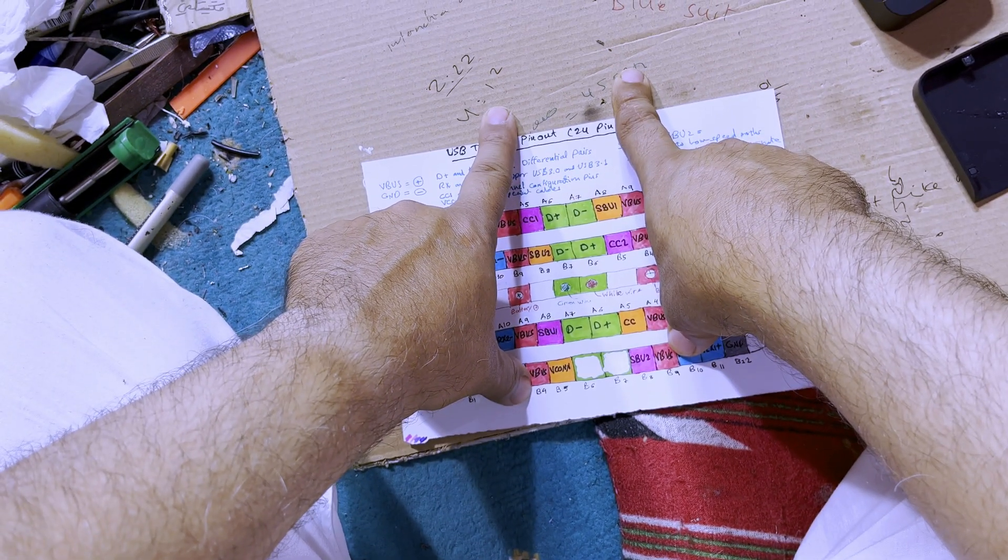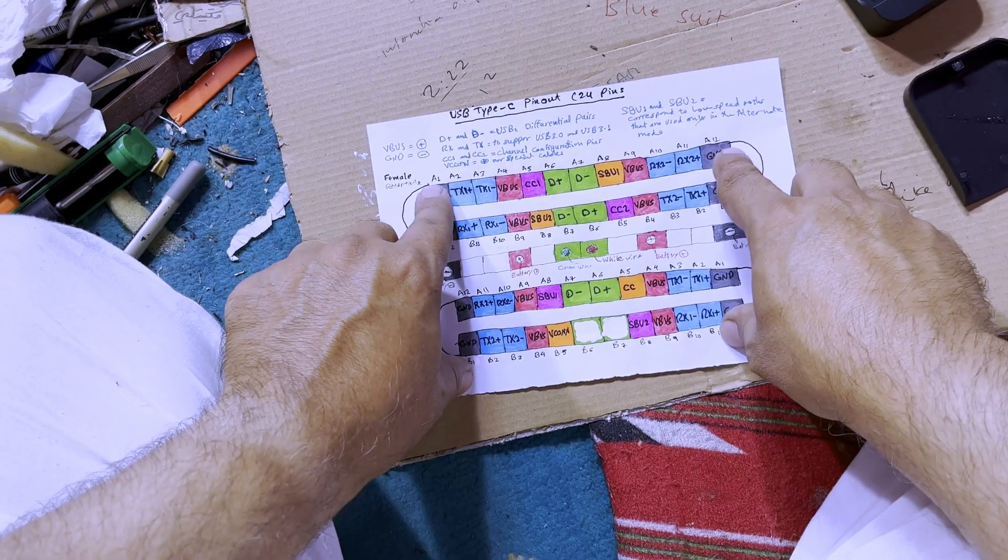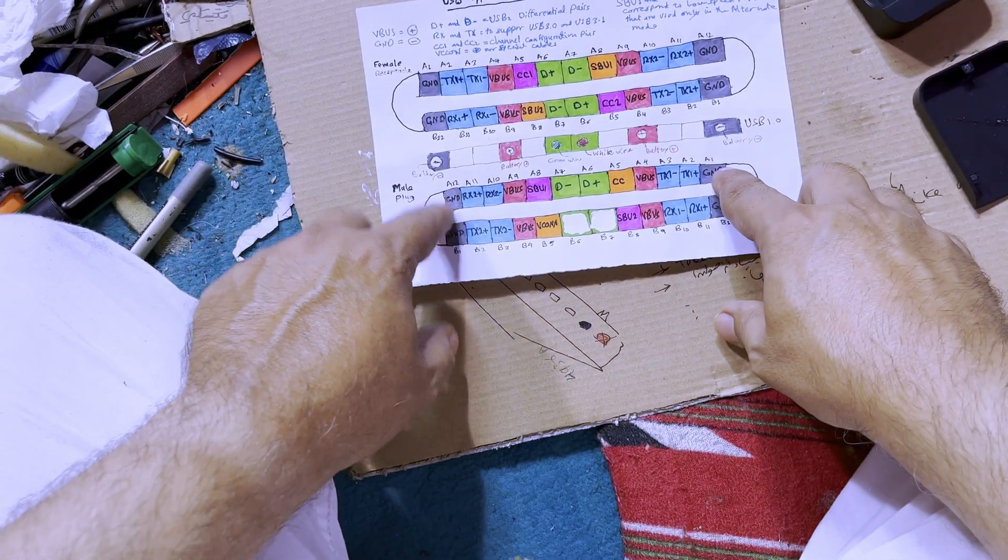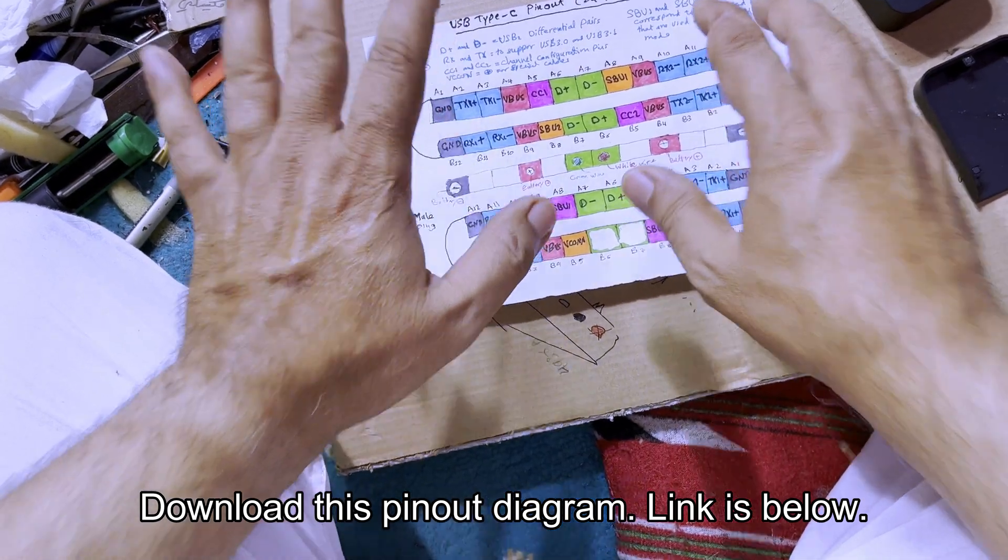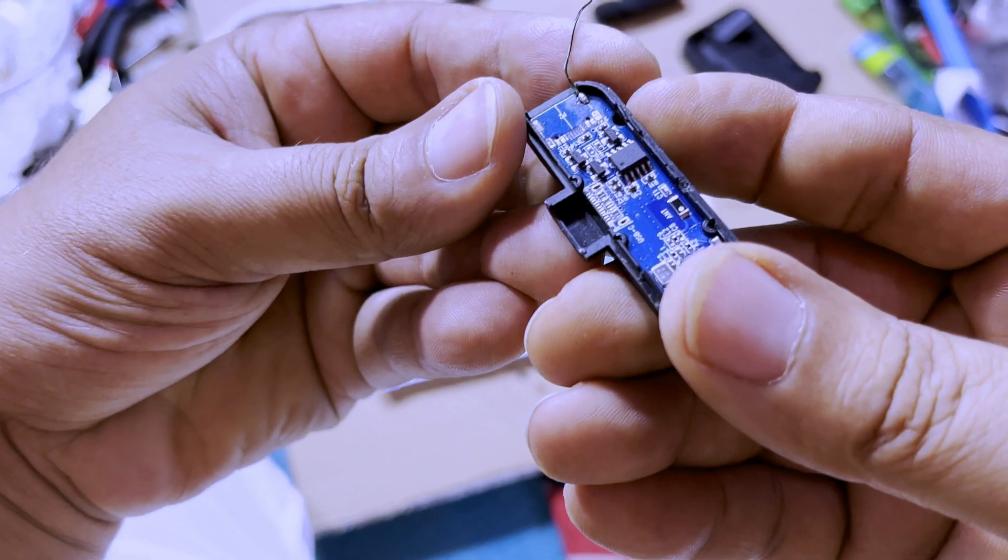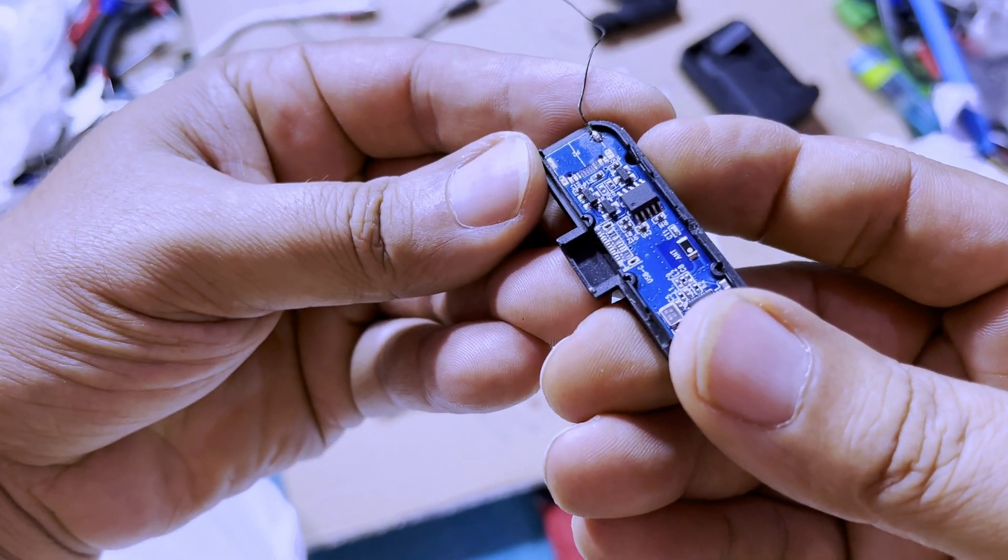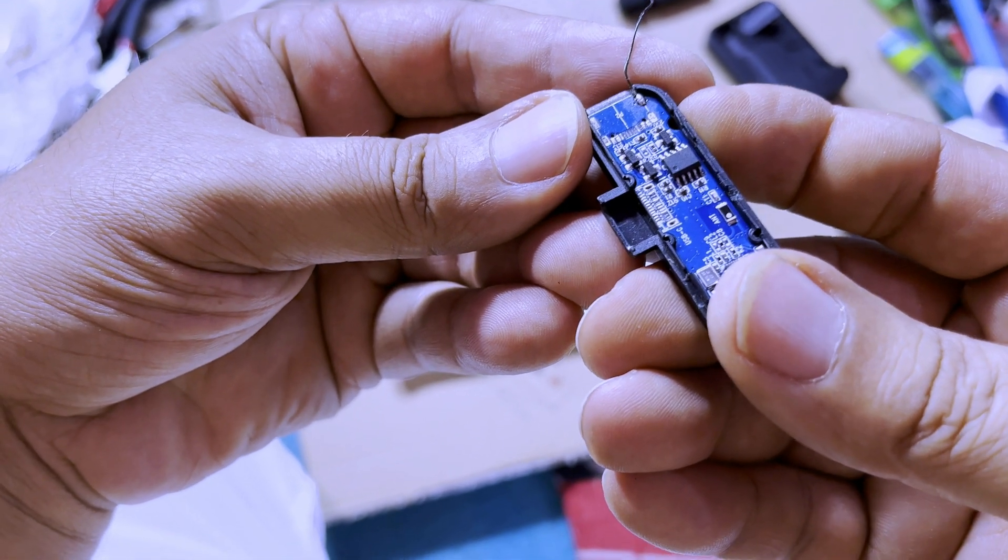When you come from this side, one two three four, this is the VCC or the positive, the plus of battery wire. This is the ground which is number one from here or from here, whether male or female. Now we have the battery because this one is depending on the supply power voltage of the cell phone itself.